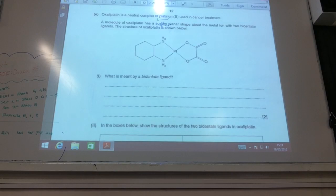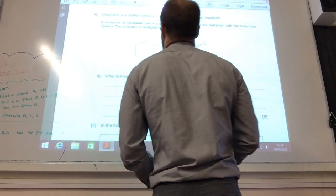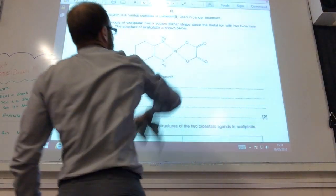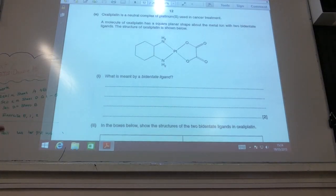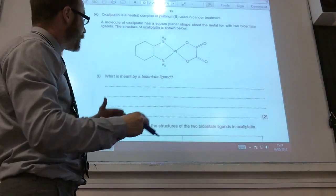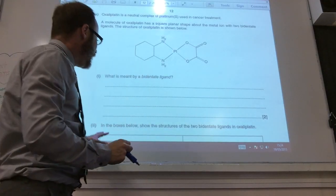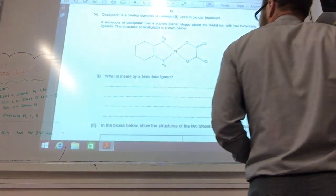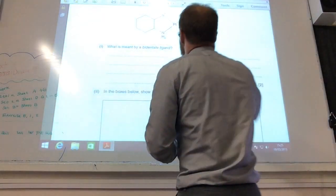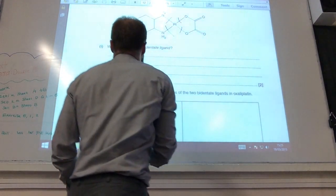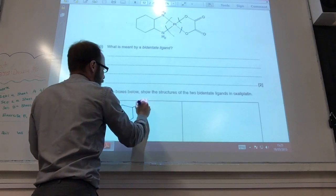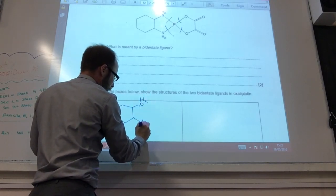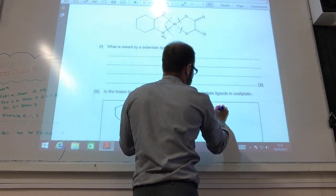Alright, a little bit now about bidentate ligands. Nice little complex, square planar platinum. What is meant by bidentate ligand? It's a ligand that can donate 2 pairs of electrons into a metal ion to form 2 coordinate bonds. In the boxes below, show the structures of those 2 ligands. So, those are my bonds there. First one is just that, a little bit of a copy of these.